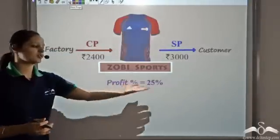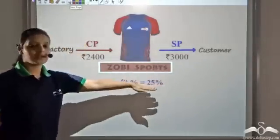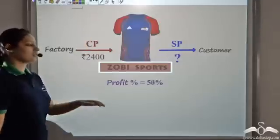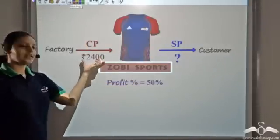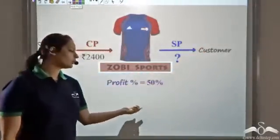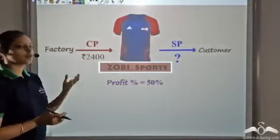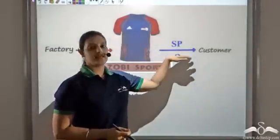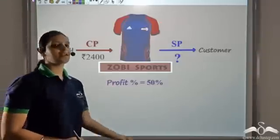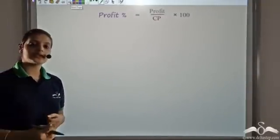Zobie Sports wasn't too happy with this profit percentage. They wanted a profit of at least 50 percent. But the factory was selling it at 2400 rupees. So what price should they sell it to the customer in order to gain a profit percent of 50? We want profit percentage of 50, we know the cost price, and all we need to do is find the selling price. Let's come back to the formula of profit percentage and try to see whether we can find the selling price from it.